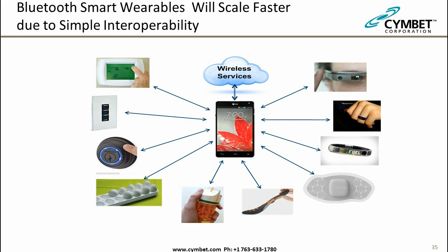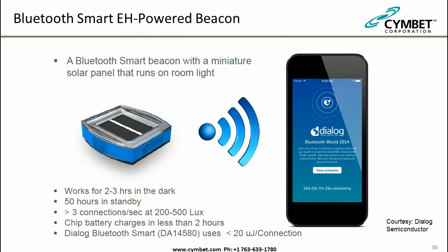For Internet of Everything end devices, Bluetooth Smart (Bluetooth 4.0) is attractive because of its simple interoperability — devices come up, register, and find each other, and now Bluetooth beaconing provides transmit-only capability. Here's an example from Dialog: a small beacon using a solar cell that works in the dark for two to three hours, runs 50 hours in standby, and achieves three connections per second in relatively low office light. The internal battery is an Enerchip using the ultra-low power Dialog Bluetooth Smart chip.